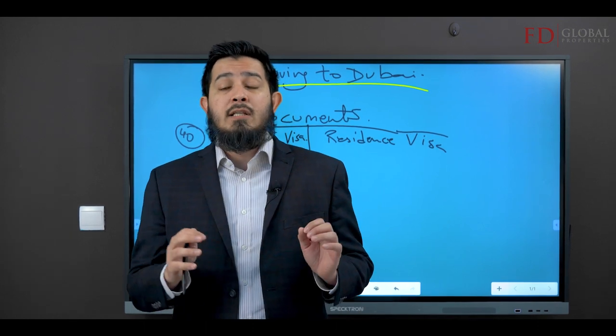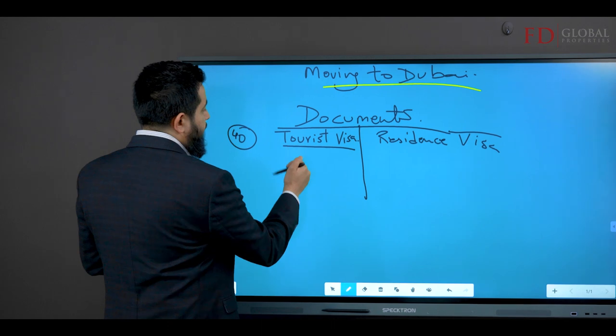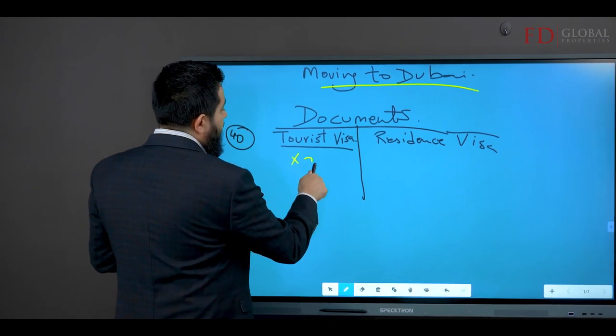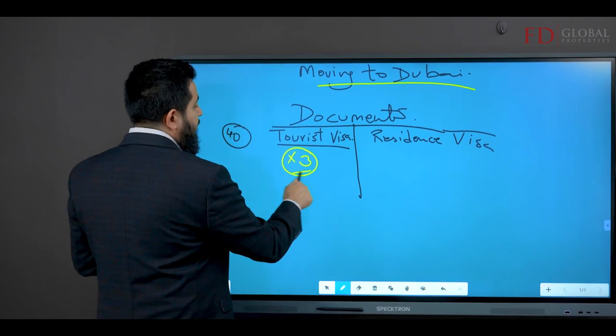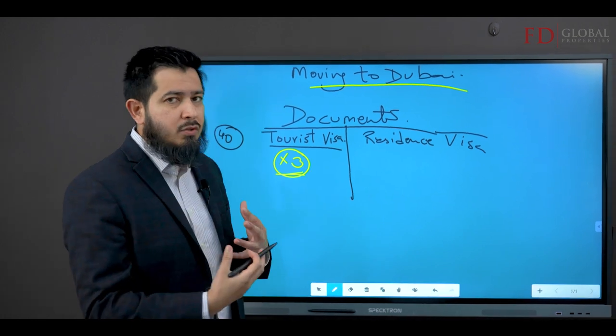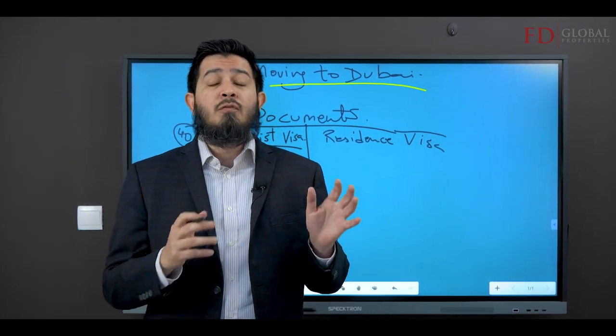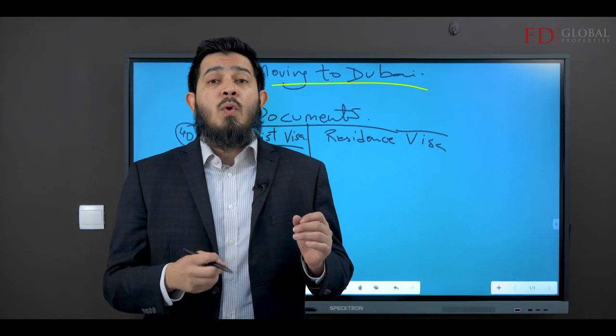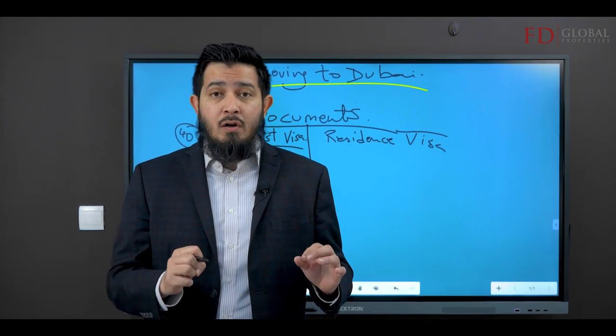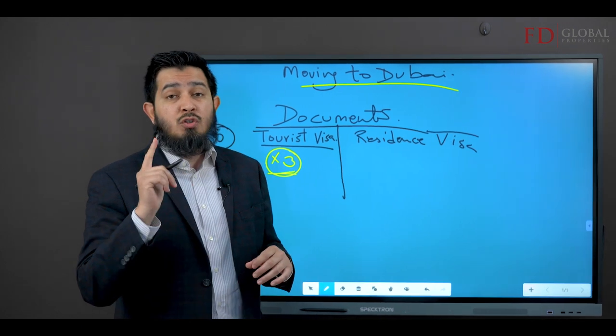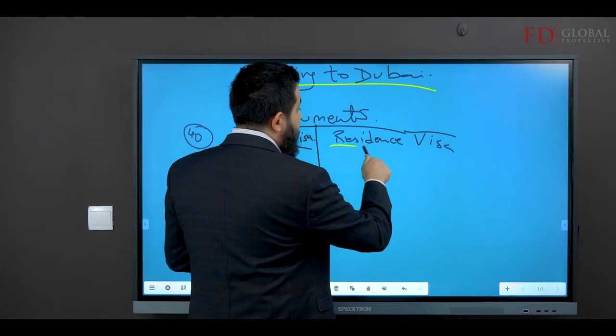Now this tourist visa could be actually renewed two or three times. The rules do change around that, so disclaimer, you're going to have to check this yourself. But if you're coming into Dubai with an eye to living here, then there is something else that you need to do, which is a residence visa.